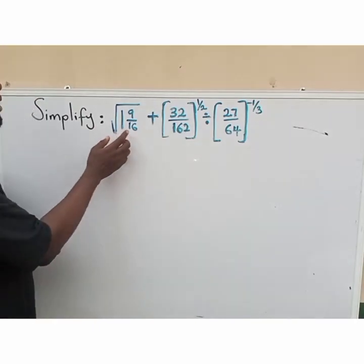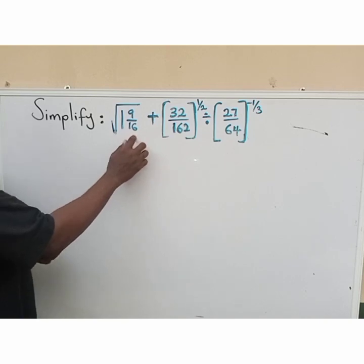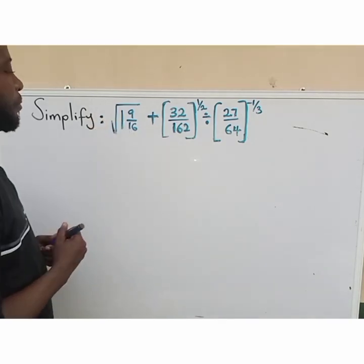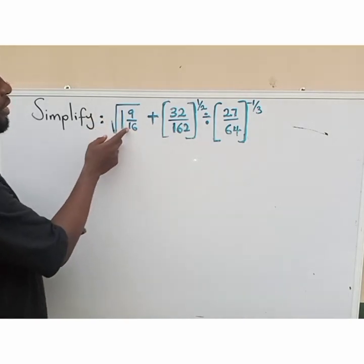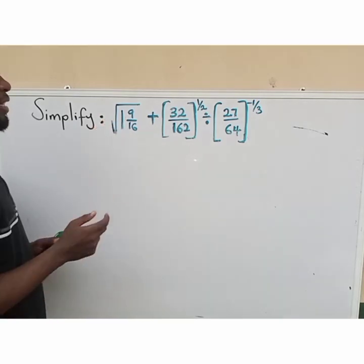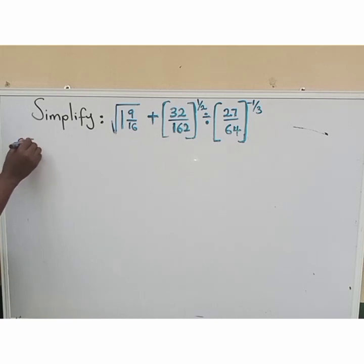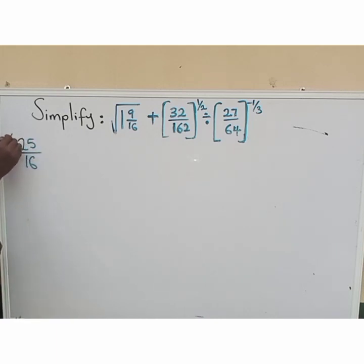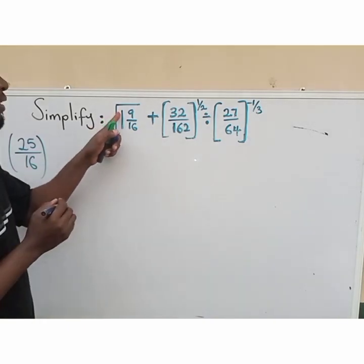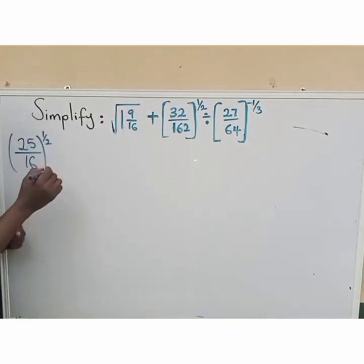The first thing is to change this mixed fraction to an improper fraction. So that's going to be 16 multiplied by 1, which is 16, plus 9 — that gives us 25 all over 16. Now let's put it into brackets. The square root here is going to change to the power of 1 all over 2.